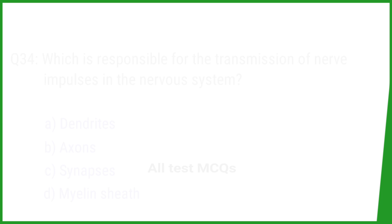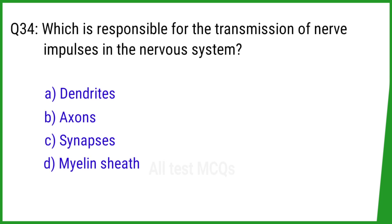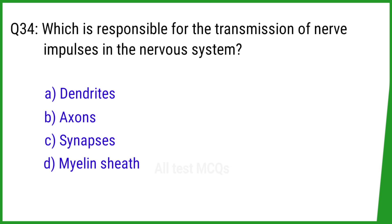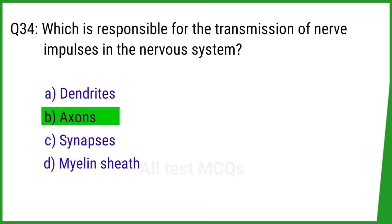Question number 34. Which is responsible for the transmission of nerve impulses in the nervous system? The right answer is option B: Neurons.